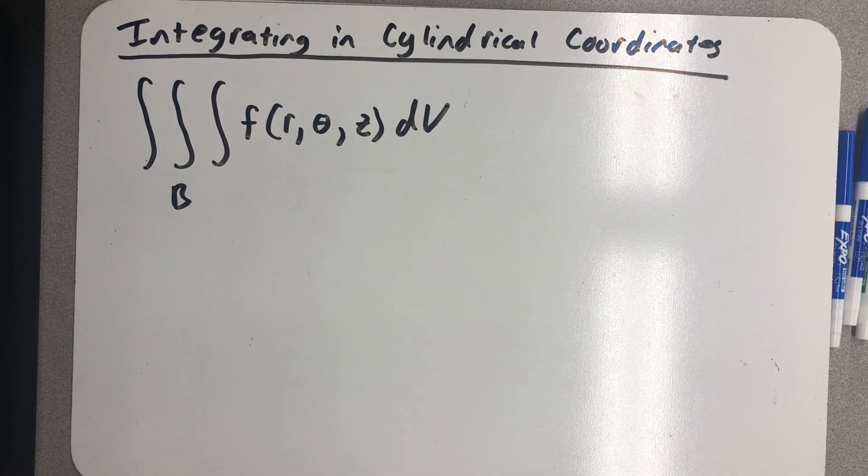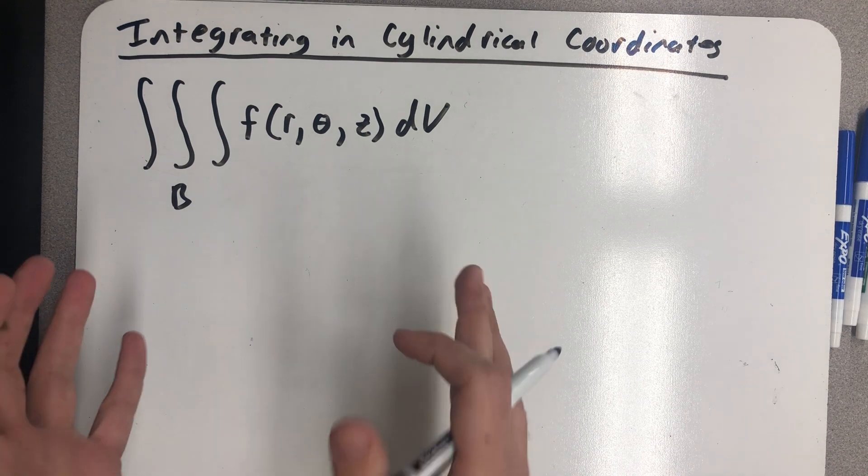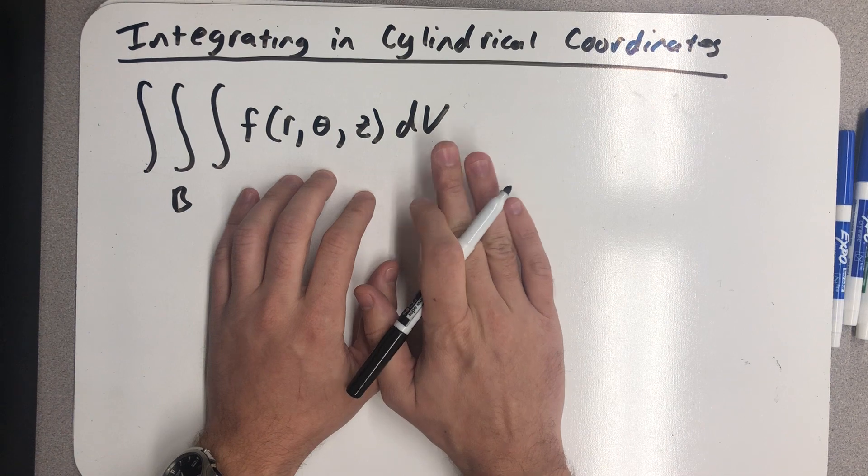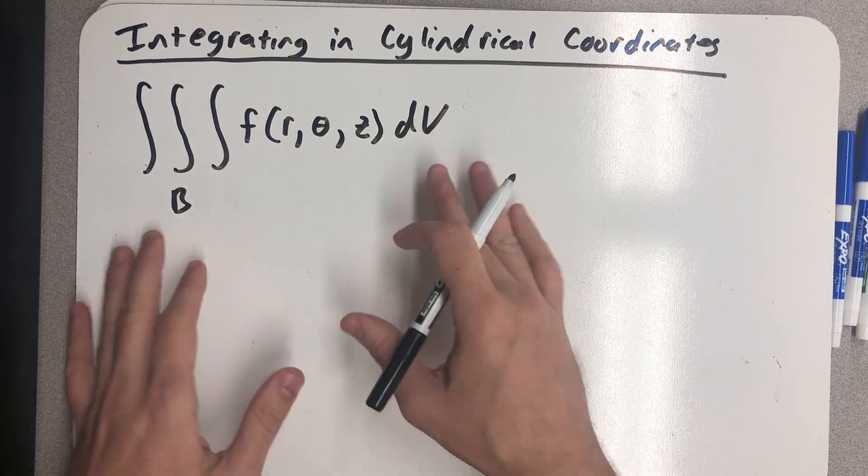Let's imagine we were asked to integrate a function that was given to us in cylindrical coordinates. So I have a triple integral of some cylindrical function with respect to volume over a solid region B.